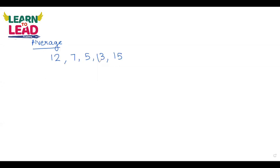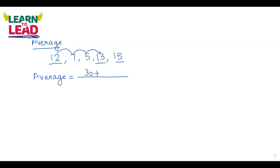So we have 12, 7, 5, 13, 15. To find the average, we add them. First, the 10s: 12, 13, 15 — that is 3 tens, so 30. Then the units: 2 plus 7 is 9, plus 5 is 14, plus 3 is 17, plus 5 is 22. So total is 52. Divided by 5 gives 52 ÷ 5 = 10.4.